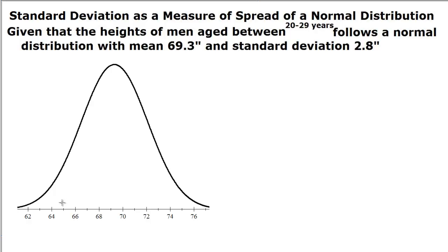So here is our normal curve that gives us this distribution. We know that the mean is 69.3, and the standard deviation is 2.8. Let's note what percentage of heights of young men in this age range is within one standard deviation of the mean.